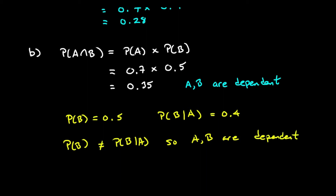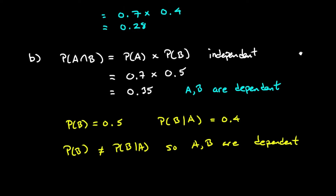So there's our explanation: either rely on the conditional probability P(B|A) being different than P(B) in isolation, which is enough to demonstrate dependent events, or go back to the basic definition of independence — if independent, chaining the probabilities in isolation should give the correct intersection, which it didn't. Both approaches confirm we have dependent events.